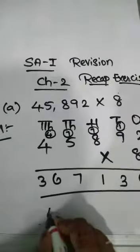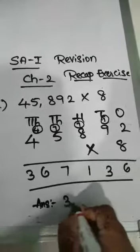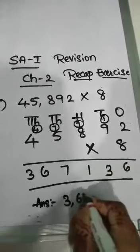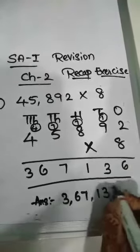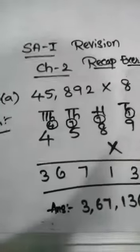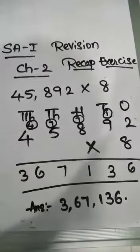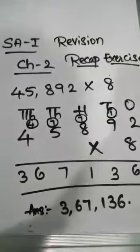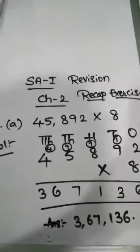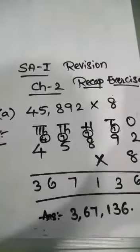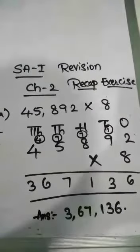So our answer is 3,67,136. So this is our answer. So like this you have to multiply. For the remaining problems, you practice in your class work.